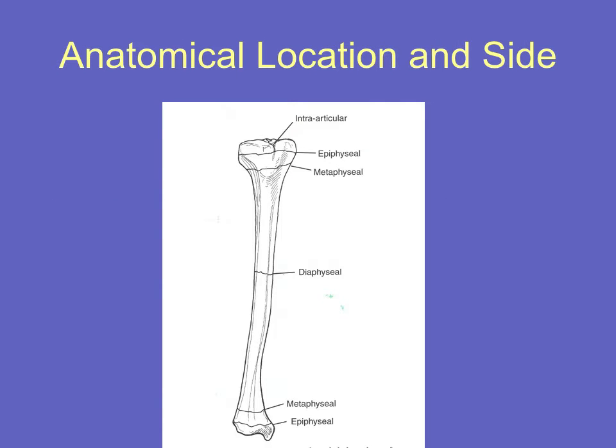We can also describe a fracture in terms of whereabouts in the bone it is. If it's in the long, thin part of a long bone, this is called diaphyseal. There's a cone-shaped part of the bone that joins up to the diaphysis, called the metaphysis. This ends at the physeal scar — the physis is where the bone grows when you're a child, and in an adult this is marked by a physeal scar where the physis has fused. On the most proximal and most distal end of the bone, beyond the physis and physeal scar, you'll find the epiphysis. A fracture through this is an intra-articular fracture.